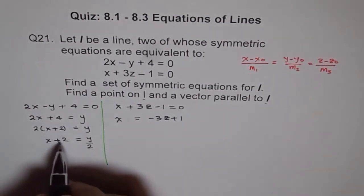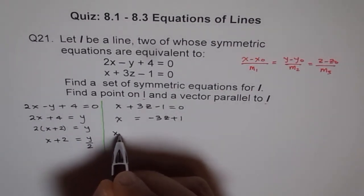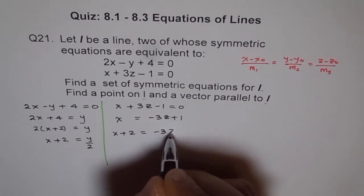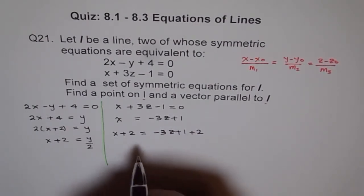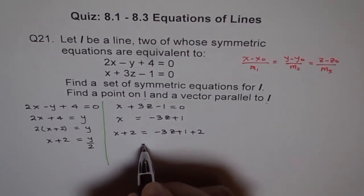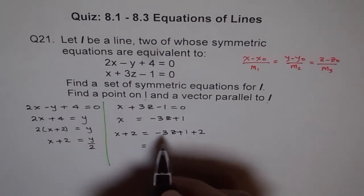Let's take these terms to the other side. We bring these terms here. So we have x equals minus 3z plus 1. And since I want x plus 2, let me add 2 to both sides. We get x plus 2 equals minus 3z plus 1 plus 2. So we got the same thing on the left side. This is 1 plus 2 is 3.